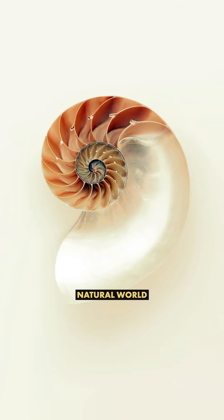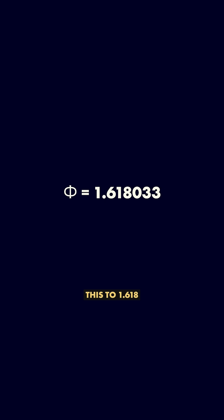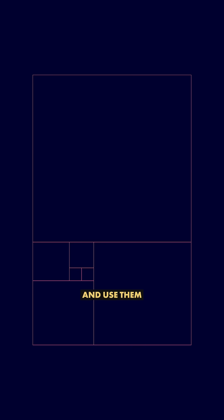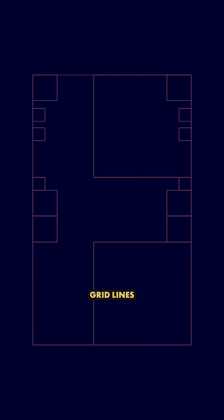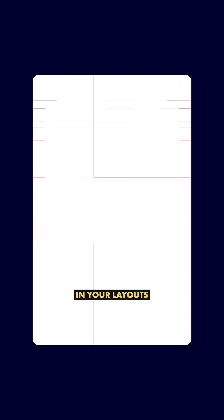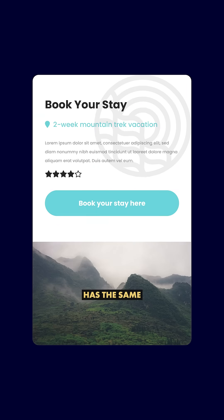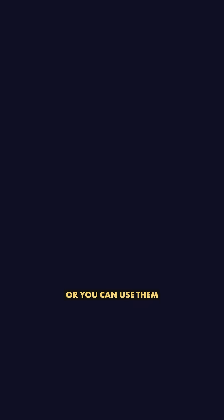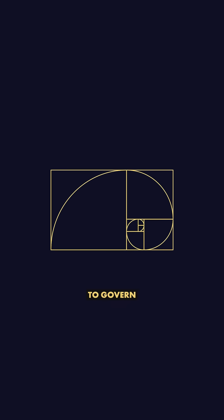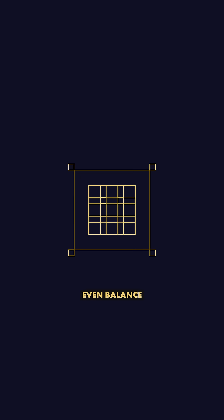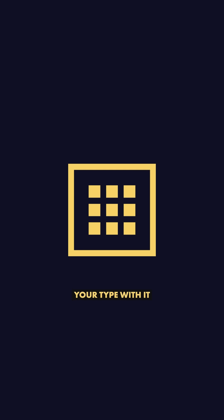Some designers put a lot of stock into this number because it shows up a lot in the natural world. For the purposes of this video, I'm going to round this to 1.618. If you want to use this in your designs, you can do things like take these squares and use them to form grid lines in your layouts, so the spacing between your elements has the same golden proportion. Or you can use them to govern the shapes of something like a logo.